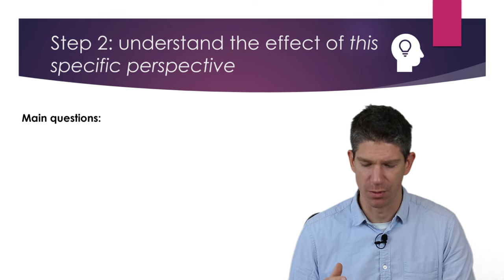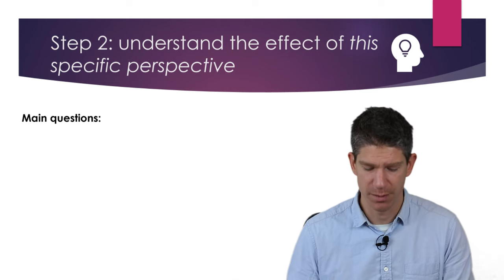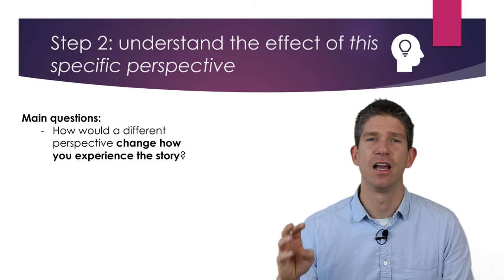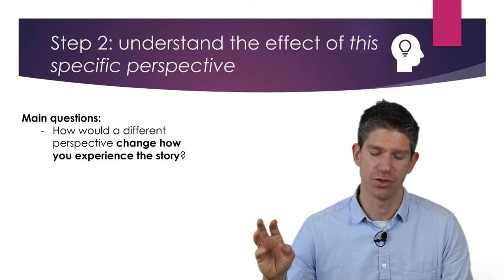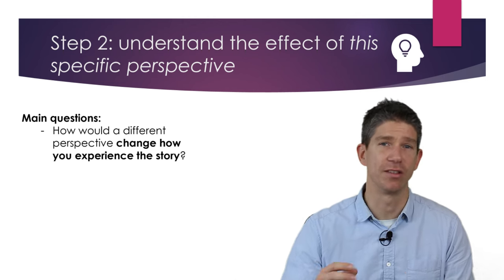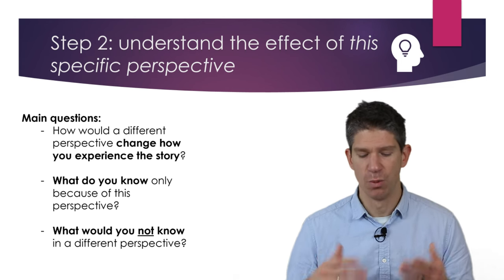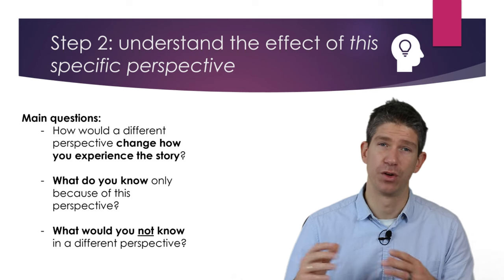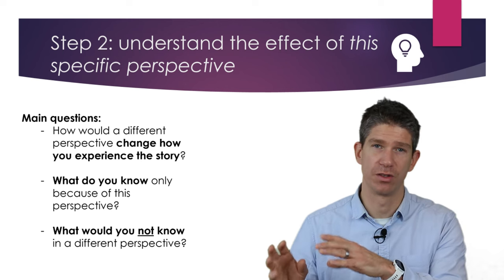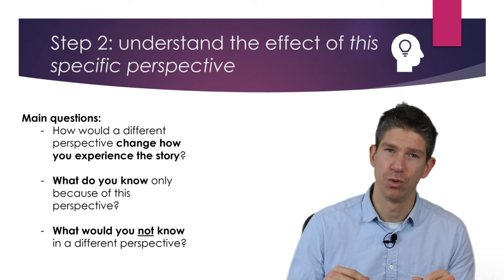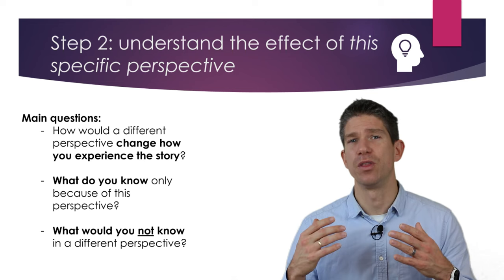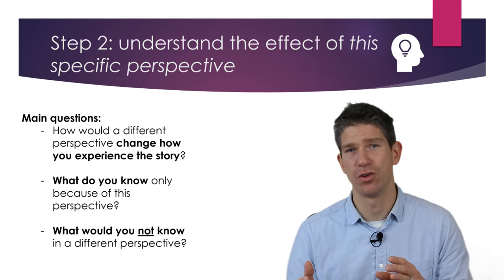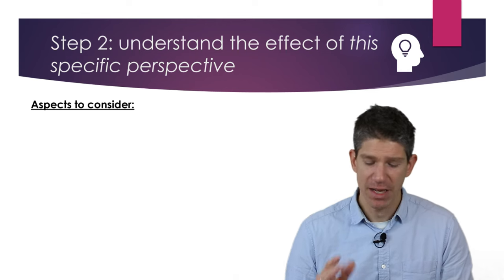It's really important to understand the effect of your narrative perspective in the text you're dealing with. Ask yourself: how would a different perspective change how you experience the story? For example, if we follow a teacher in a classroom, how would it differ if we followed a student instead? What do you know only because of this perspective — for example, what's going through the teacher's head? And what would you not know from a different perspective? The author's choice of narrator always changes the story intentionally to create an effect.